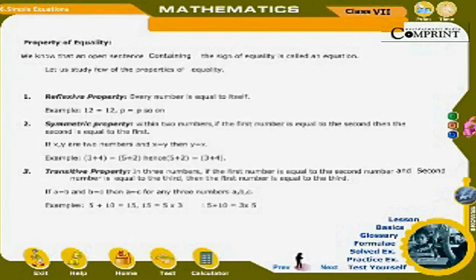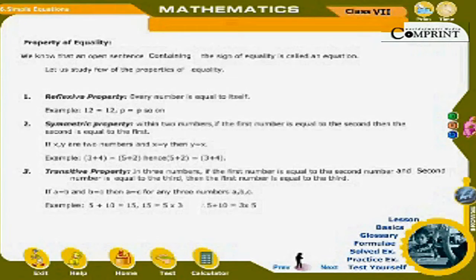Property of equality. We know that an open sentence containing the sign of equality is called an equation. Let us study a few properties of equality. 1. Reflexive property: Every number is equal to itself. For example, 12 = 12, p = p, and so on.